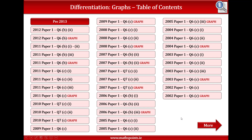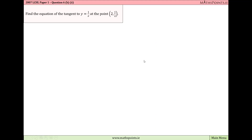We're going to use calculus to help us find the equation of a tangent to a function at a given point. This is the 2007 Leaving Certificate Higher Level Paper 1, and we've been asked to find the equation of the tangent to y equals 1 over x at the point (2, 1/2). What's important about that point is that the value of x is 2.